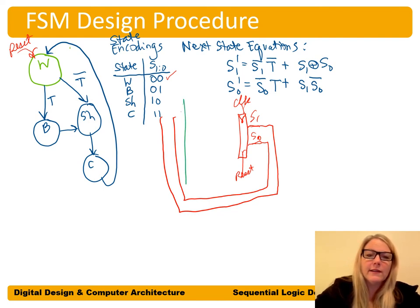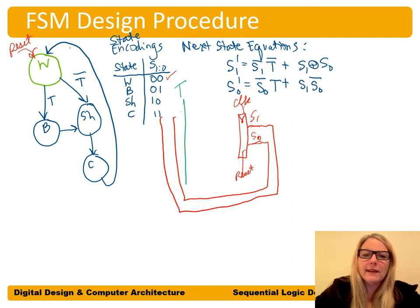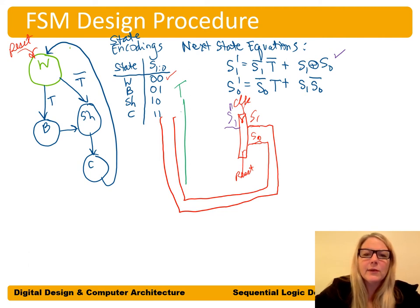We take our state bits, bring them around, and use them to calculate the next state. The state bits are output from the state register and fed into the next state logic, along with our input T. Now we look at our next state equations: for S1 prime on the left side of the state register, we implement S1_bar AND T_bar as the first product term, and then OR it with S1 XOR S0.